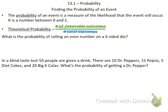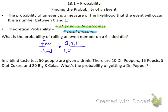With the first example, what's the probability of rolling an even number? That's what we want to happen — that's our favorable outcome — on a six-sided die. So I'm going to put my favorable outcomes on the top and my total number of outcomes on the bottom. An even number would be two, four, or six. The total number of outcomes are the numbers one through six.